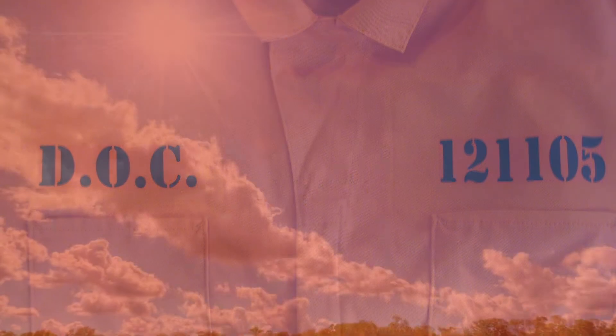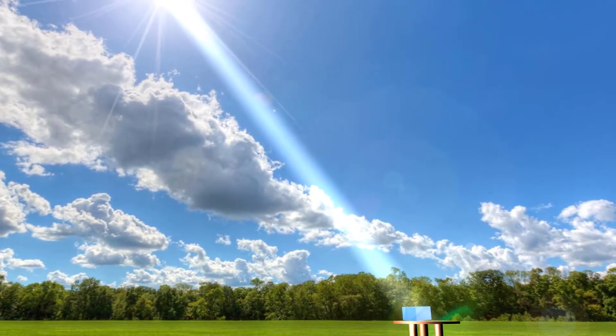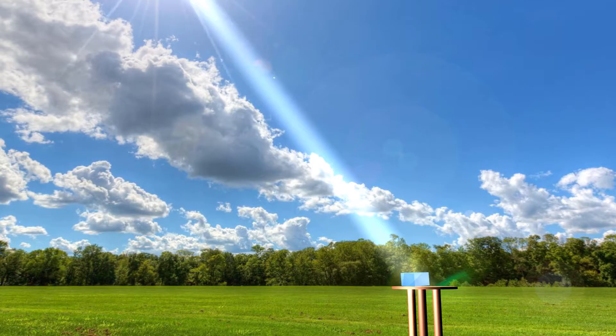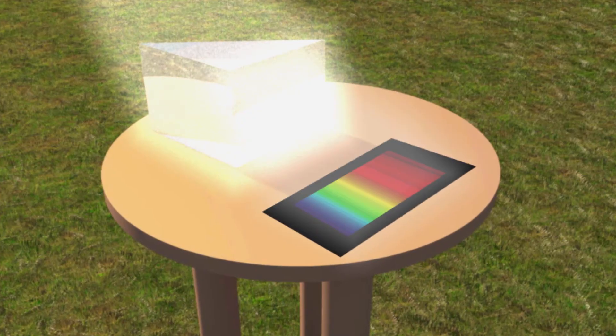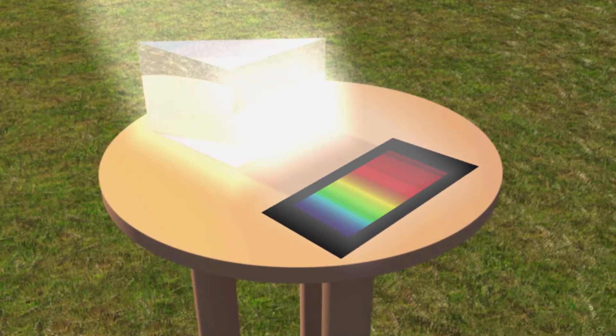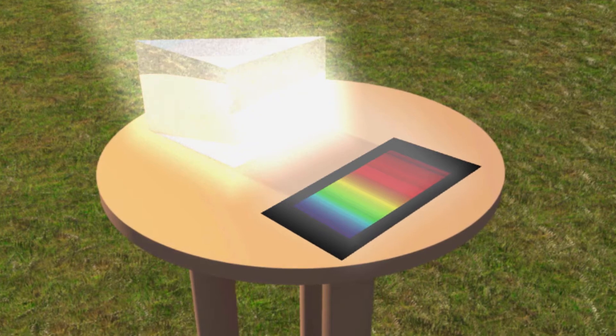A star like our sun emits light that we usually consider to be white, not counting sunrise or sunset. When we shine white light through a prism, it spreads into the various colors, starting at red and ending at violet.